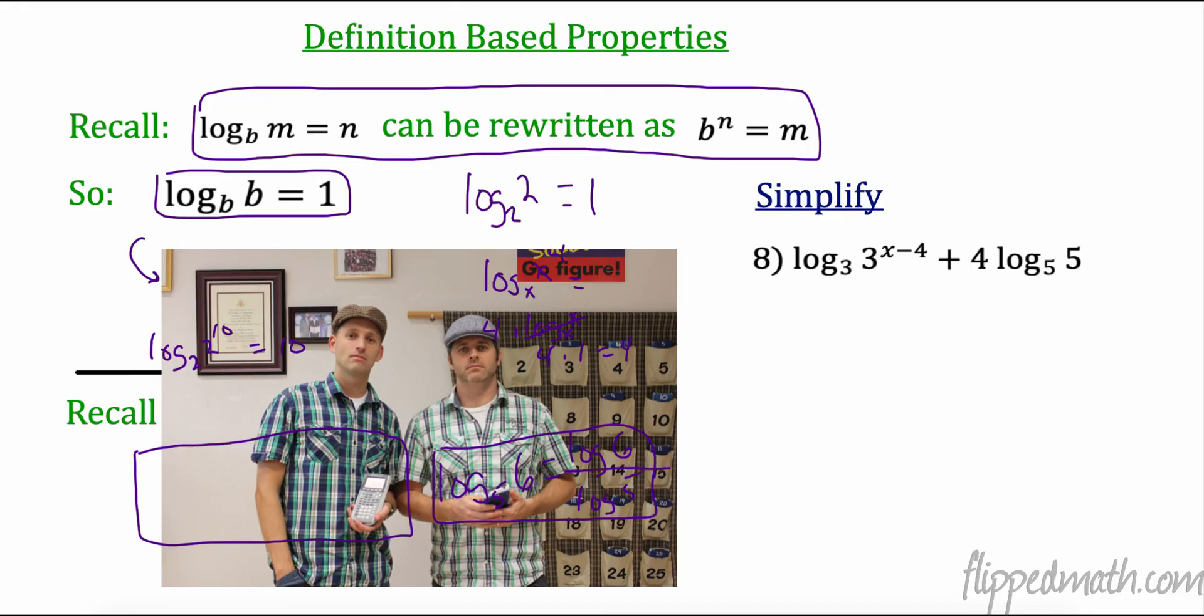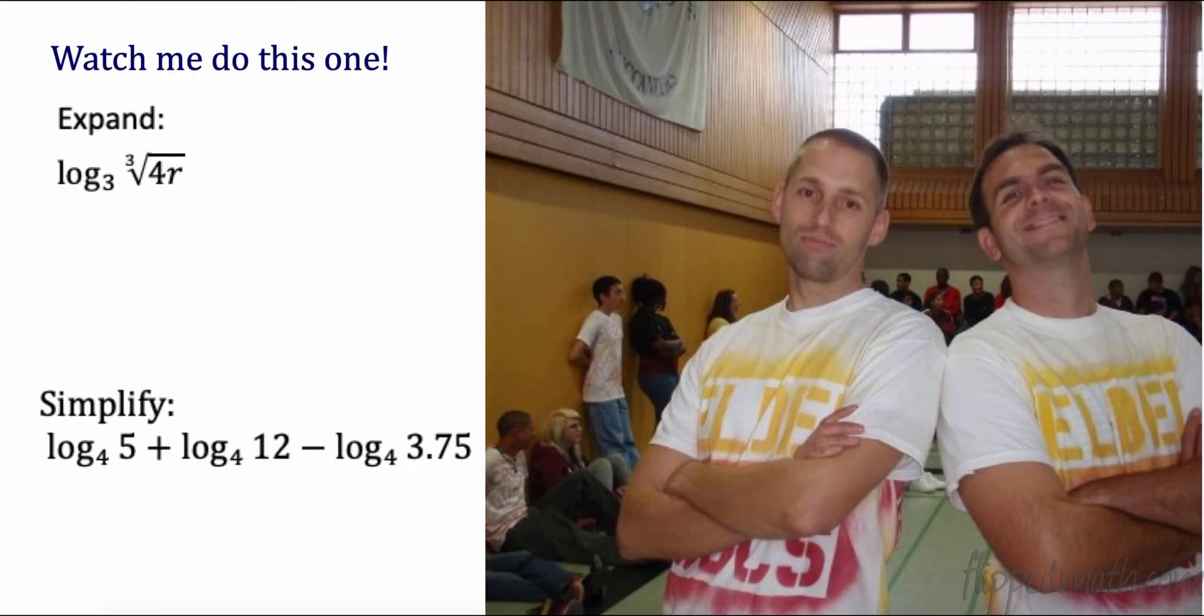Let's try this one. So I notice that I have the log base 3 of 3 to the x minus 4. That means this is 1. So my evaluation of that is x minus 4. And then I have 4 times, now I know, any time the log base 5 of 5, these match, is 1. So this is x minus 4 plus 4. And minus 4 plus 4 is just going to be x.